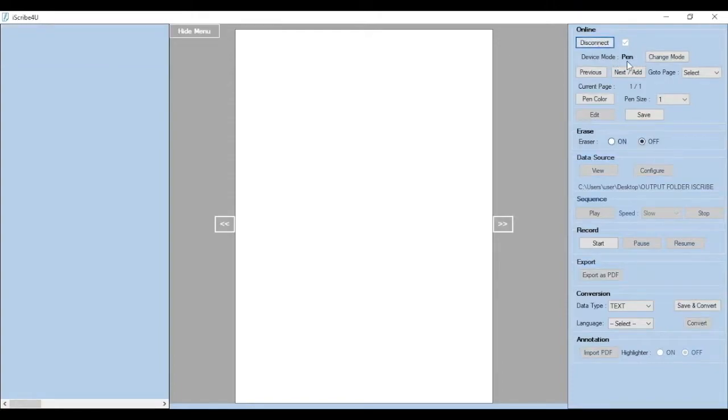Now you can see a default mode of pen mode. Change the mode to mouse mode. Whenever you want to annotate either on a PDF or on a PPT, you should be on mouse mode.